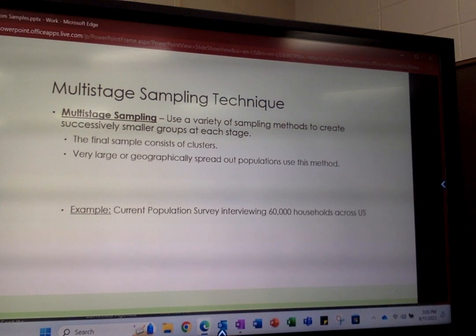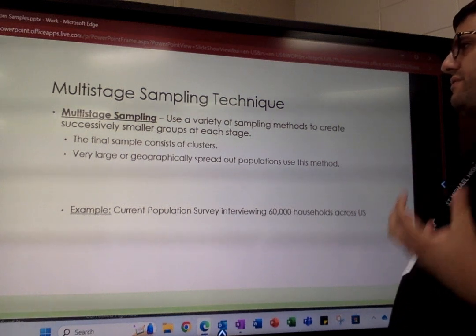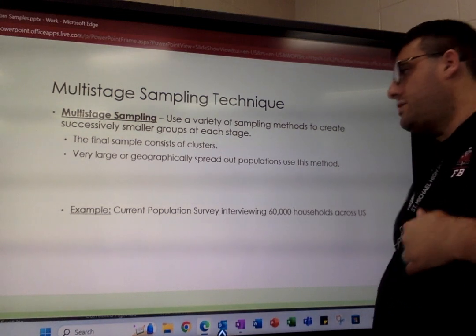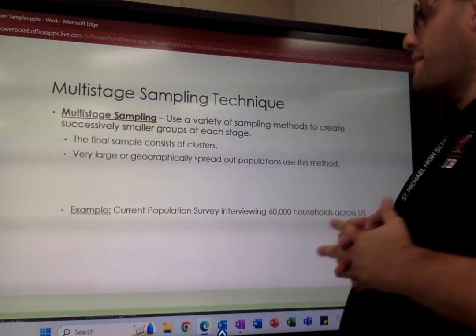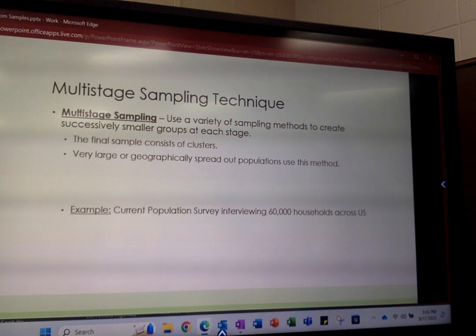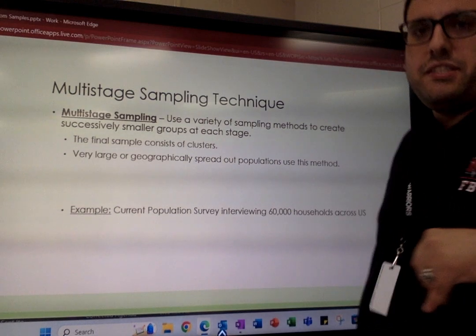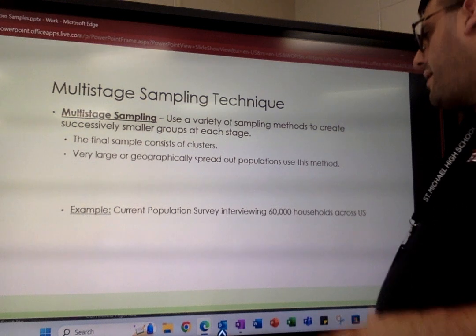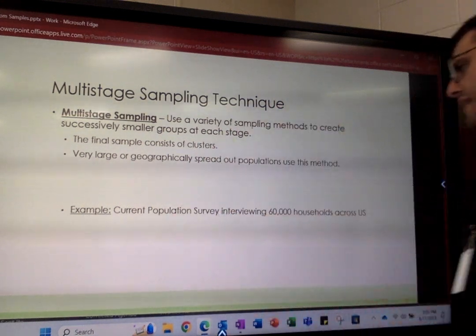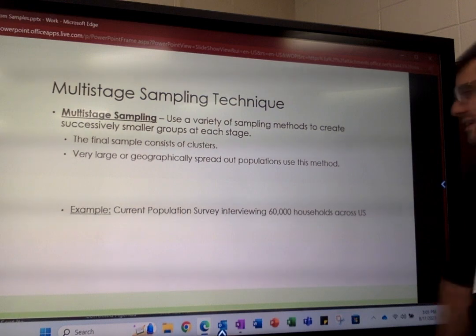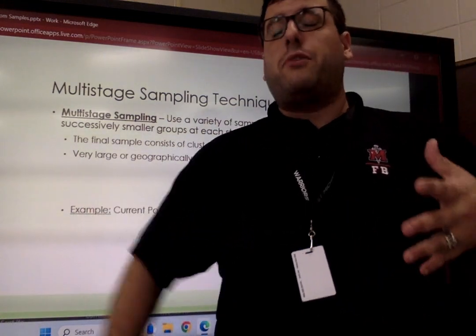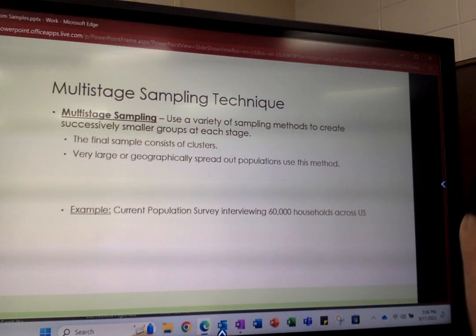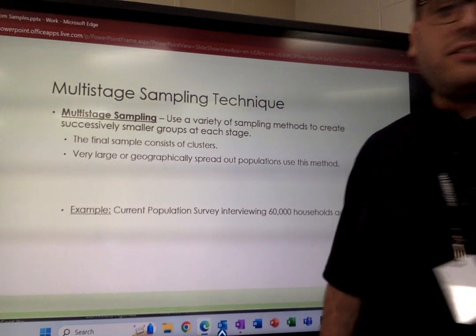If your population is too large or too geographically spread out, multistage sampling is probably the way to go. Multistage sampling uses a variety of sampling methods to create successively smaller groups at each stage, and the final sample consists of clusters. For example, the current U.S. Population Survey interviews 60,000 households across the United States — that's a huge geographical area — so multistage sampling is actually a better way to go.